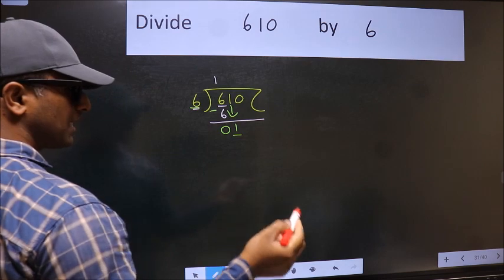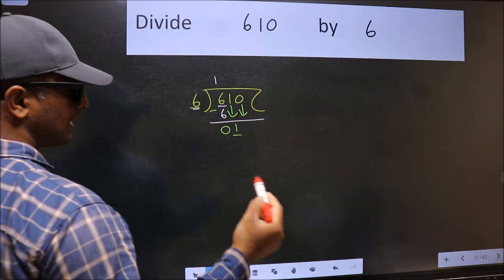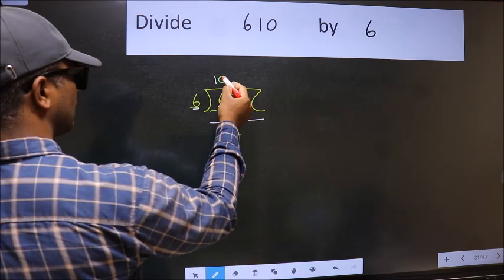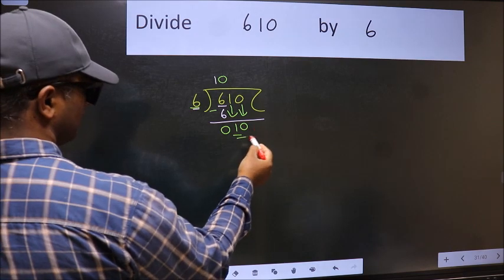So we should bring down the second number. And the rule to bring down the second number is we should put 0 here. Then only we can bring this number down. Now 10.